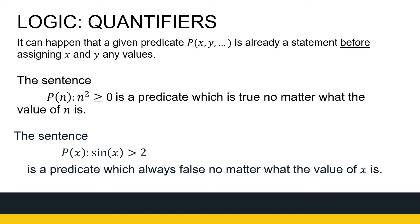Sometimes a predicate is already a statement before we have specific values. For example, for some number n, if I square it, I get a positive number or zero — that's always true for numbers. Or if I have a predicate like sine of x is greater than 2, we know sine of x is between minus 1 and 1, so that is always false. For those special cases, we don't need a specific variable value because it's always true or always false.